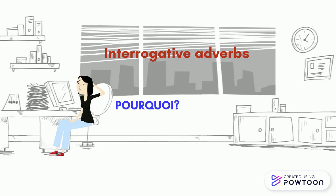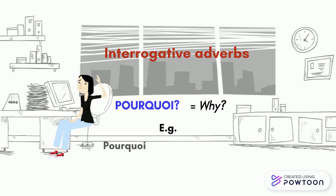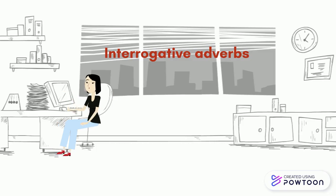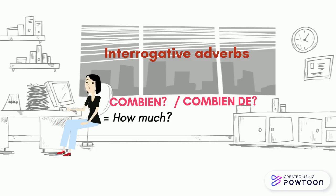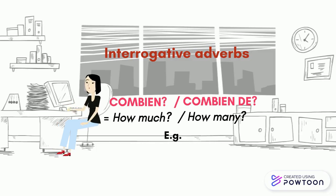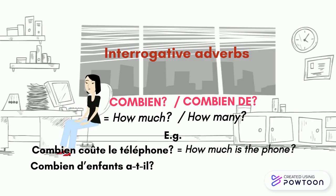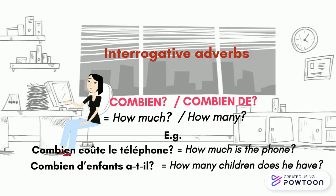Pourquoi? — Why? For instance, Pourquoi le ciel est-il bleu? — Why is the sky blue? And Combien? or Combien de? — How much? How many? For instance, Combien coûte le téléphone? — How much is the phone? Combien d'enfants a-t-il? — How many children do they have?